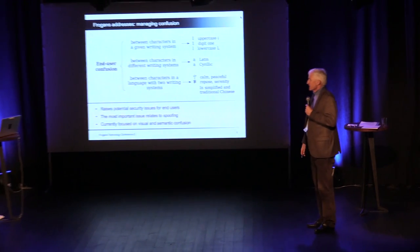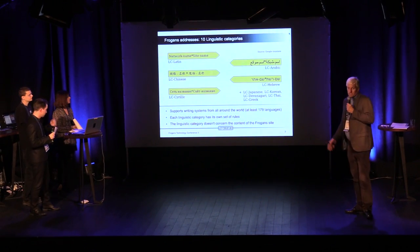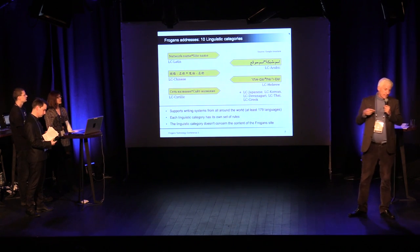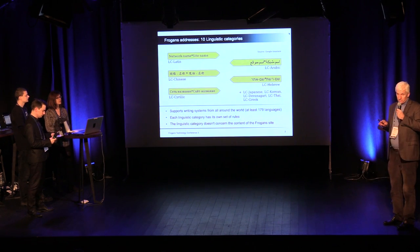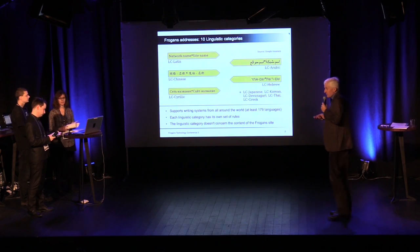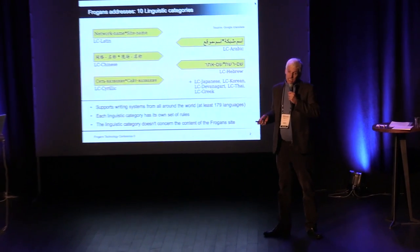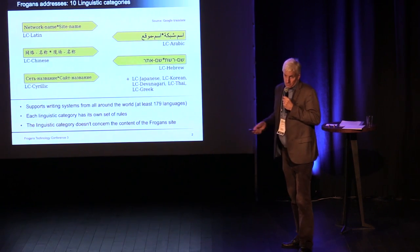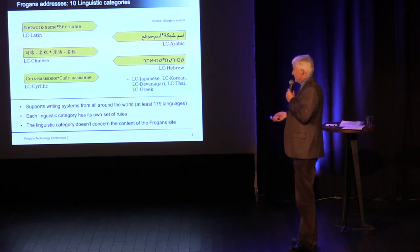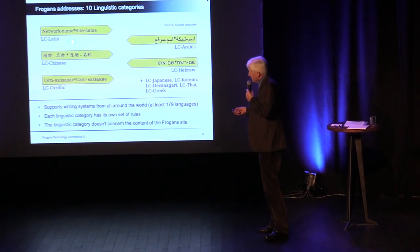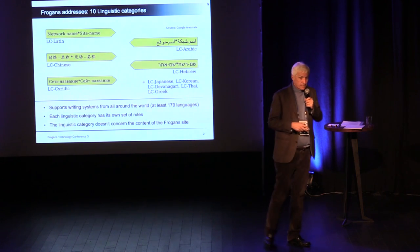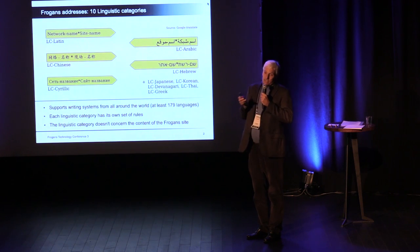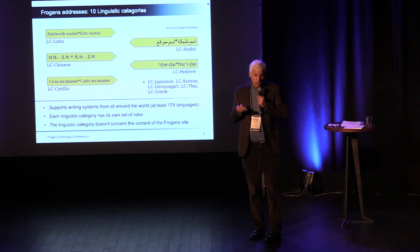How does the Frogans addressing system manage confusion? One of the primary mechanisms we use is to differentiate the intended language or writing system for a given address. When you register a Frogans network or a Frogans site, the first thing you must tell it is what is the linguistic category for which your address will be used. We've defined 10 different linguistic categories, which are designed to support as many of the world's writing systems as possible, covering about 180 different languages worldwide.